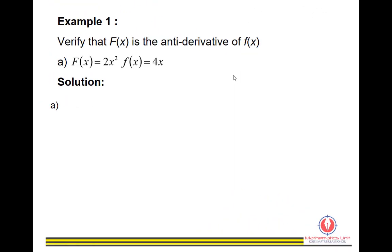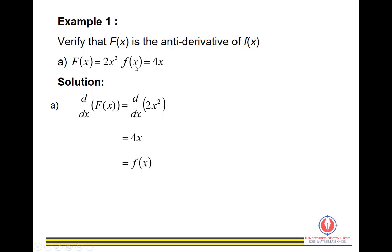Example 1: Verify that F(x) is the anti-derivative of f(x). Part A: Given F(x) = 2x² and f(x) = 4x. To verify, first we differentiate F(x) = 2x², and we get 4x, which equals f(x). Next, we integrate f(x) = 4x and we get 2x² + c.